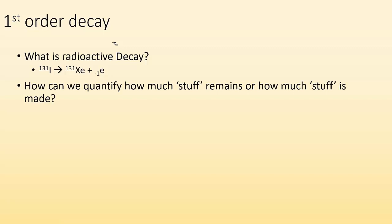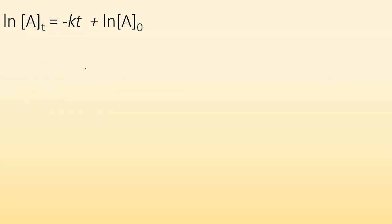So how can we quantify how much stuff remains or how much stuff is made? We started with a certain amount of iodine-131. Time goes by, and we get this process. We end up with less iodine. How much iodine is left? How much xenon did we make? So that's what we want to address in this video, and it's going to be done by using first-order kinetics, which we looked at when we did rates of reactions, chemical reactions.